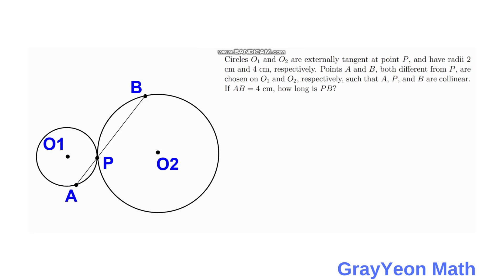Welcome to Grayon Math. You are asked to solve for this problem. Circles O1 and O2 are externally tangent at point P and have radii 2 cm and 4 cm respectively.